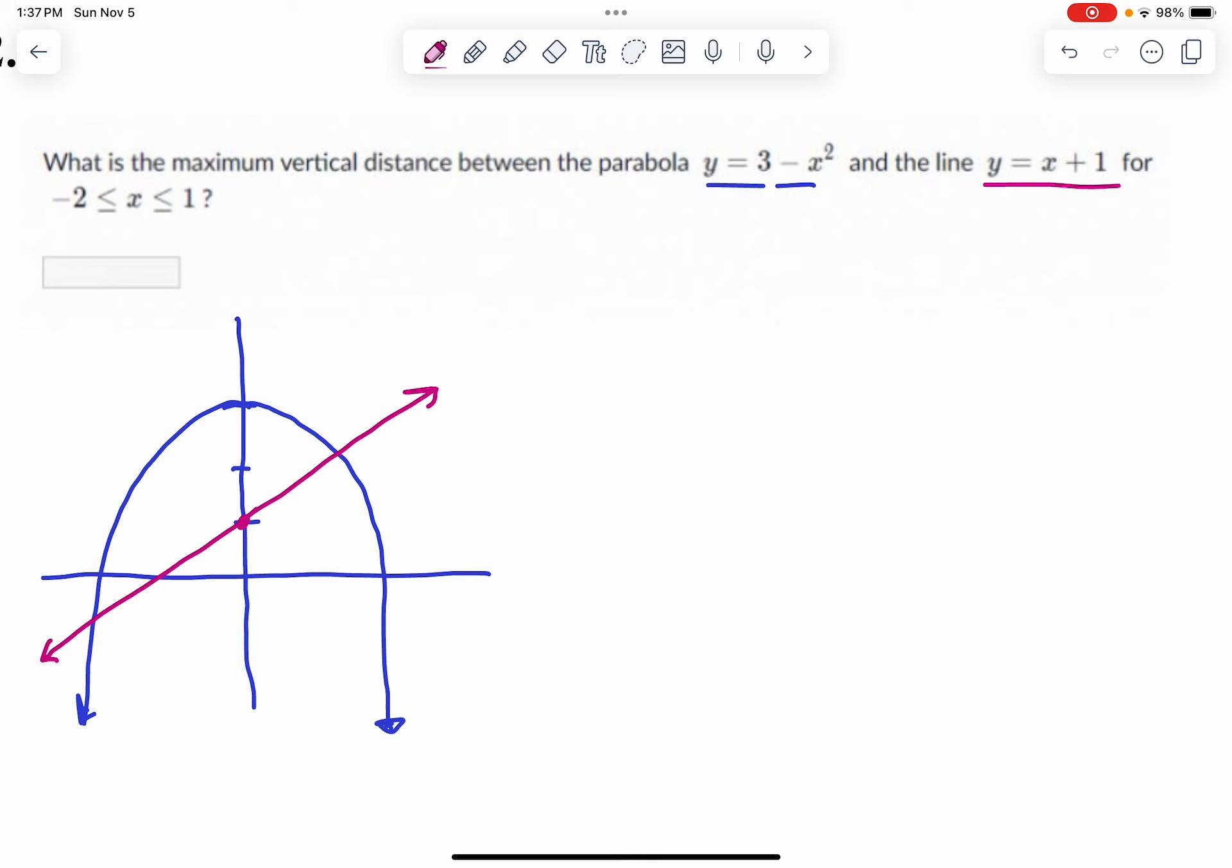Notice we can tell where those intersection points are, because I have a suspicion the intersection points are actually these values here. So let's check that. We would want to know when the parabola is equal to the line, and that will likely produce two solutions. I'm going to add x squared to both sides and minus 3, and that gives us x equals negative 2 and 1. So that makes sense. Now we know that those intersection points are actually determining our interval.